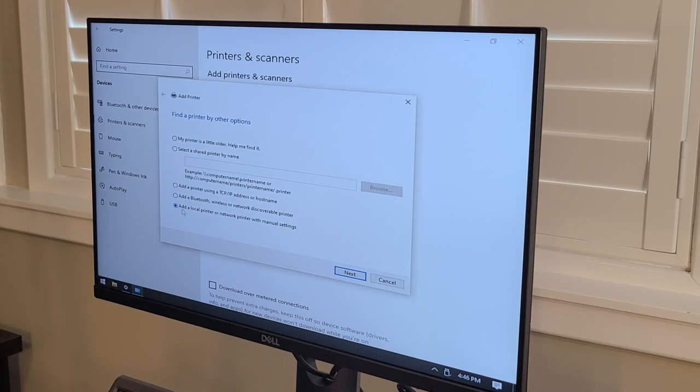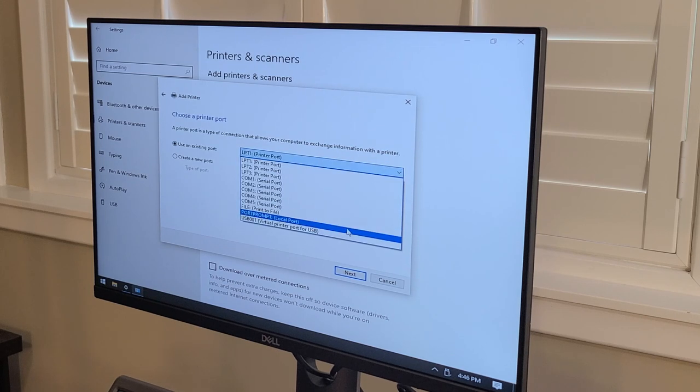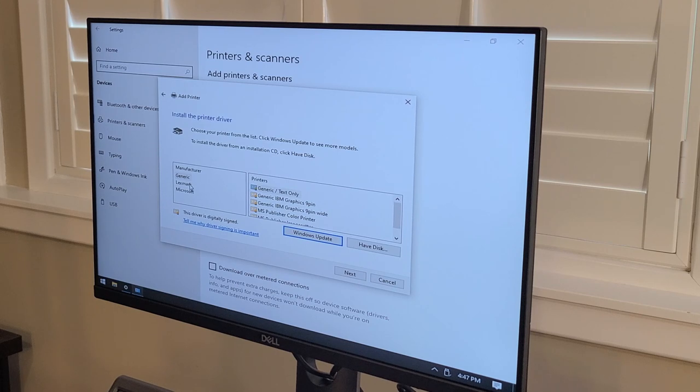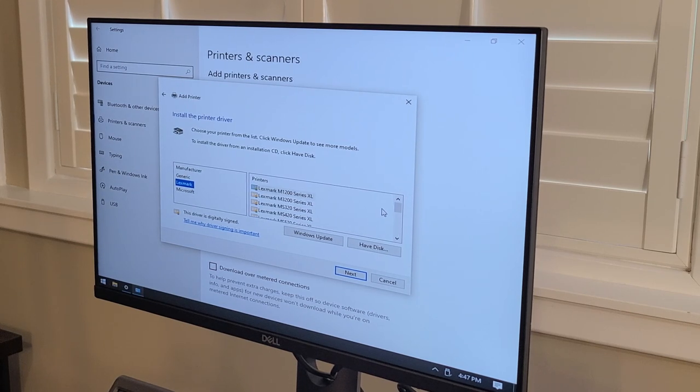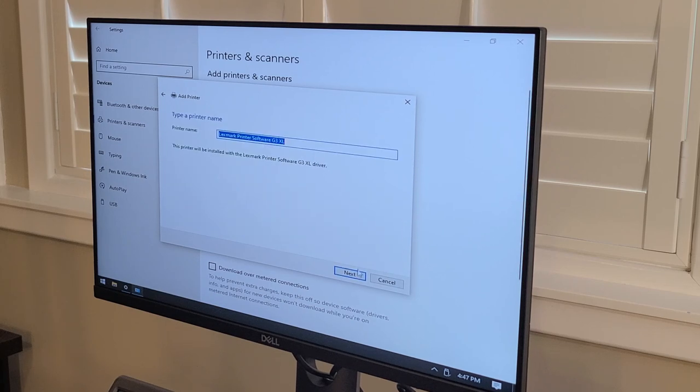And we already connect the USB cable of the printer to the computer. So we can click here, say add a local printer or network printer with manual settings. Say next. And then use existing port because we have a USB port for that printer. Then we click next. And it's a Lexmark printer. Now don't worry about the model, the B2338 of this Lexmark printer because there's none. This one is very hard. You have to say Lexmark printer software G3 XL. And then you click next.